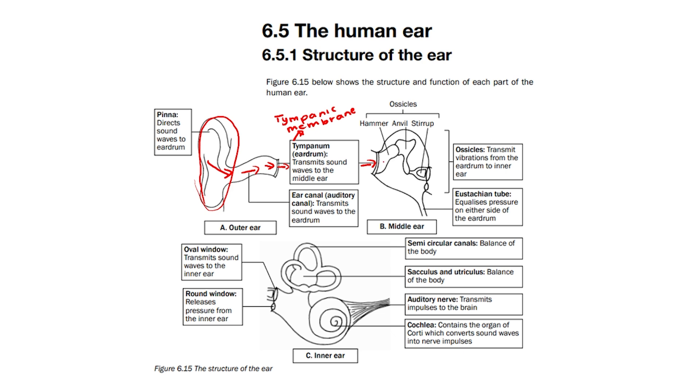From the tympanic membrane, the sound waves then go to three small bones known as the ossicles. These transmit vibrations from the eardrum to the inner ear.